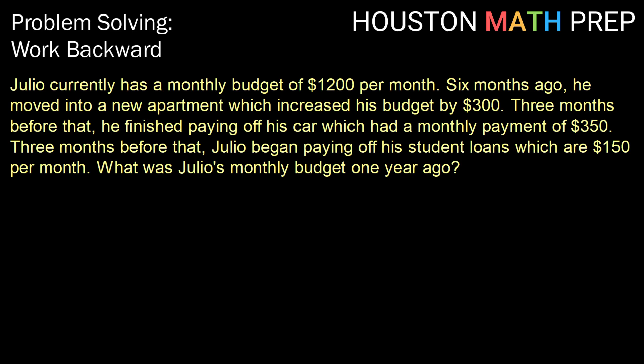Julio currently has a monthly budget of $1,200 per month. Six months ago, he moved into a new apartment, which increased his budget by $300. Three months before that, he finished paying off his car, which had a monthly payment of $350. Three months before that, Julio began paying off his student loans, which are $150 per month. What was Julio's monthly budget one year ago?